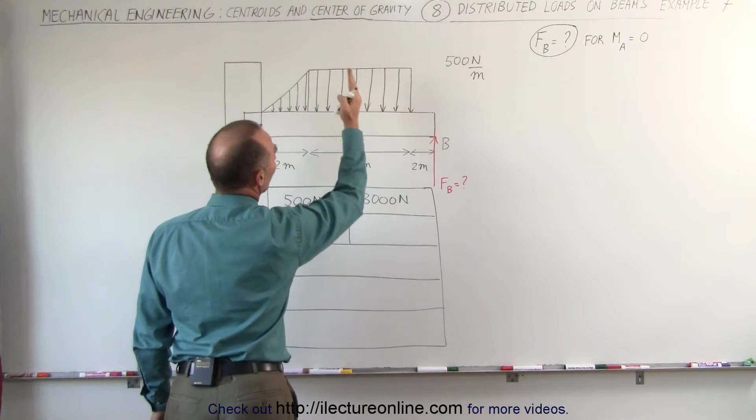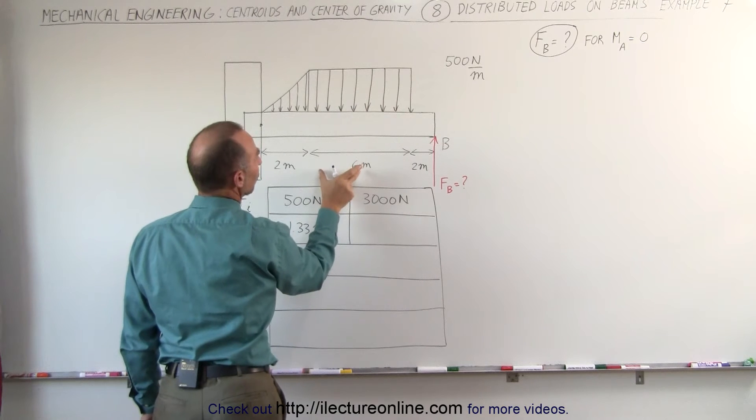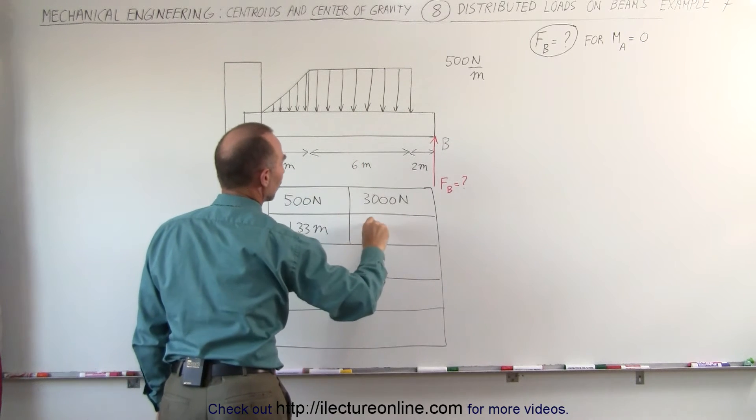The centroid for this segment is right halfway in between. That would be three meters plus two meters, which is five meters.